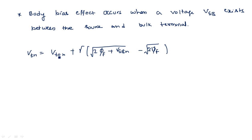Here gamma indicates the body bias coefficient, with units of V^(1/2), and φF is the bulk Fermi potential.